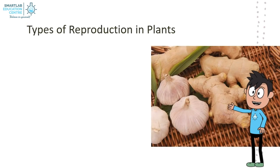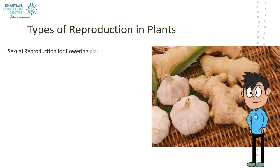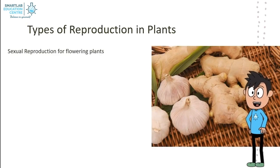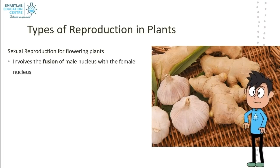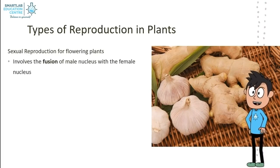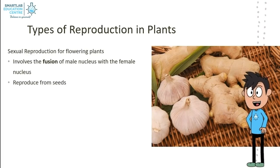Types of reproduction in plants. First, we have sexual reproduction for flowering plants. This involves the fusion of a male nucleus with a female nucleus. These plants reproduce from seeds.